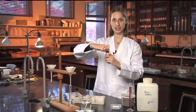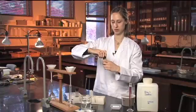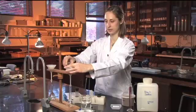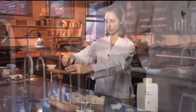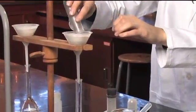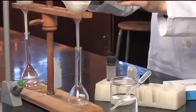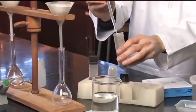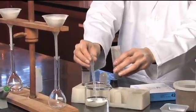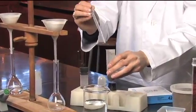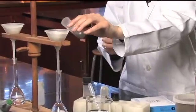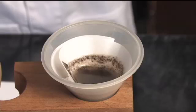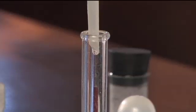Take the shaken sample and just pour it into the filter. Give it a little bit of a rinse to make sure that you have everything out of that centrifuge tube. And then wait for it to gravimetrically filter.